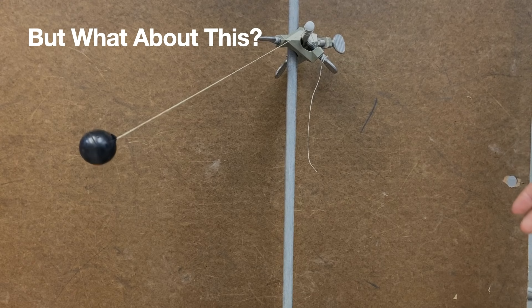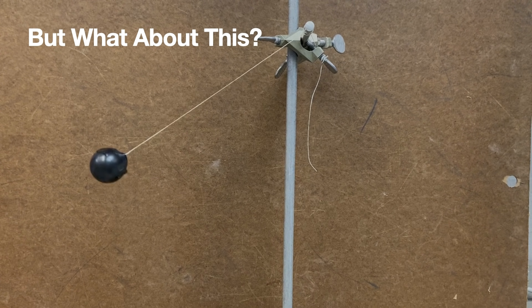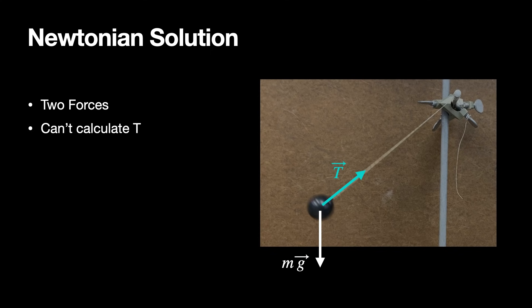What about a situation like this? This is a pendulum — the ball is swinging back and forth. Let's think about how you would solve this with Newtonian mechanics. There are two forces acting on this ball: the downward gravitational force, which you can calculate, and the tension force from the string. And you can't calculate the tension — there's no tension equation. It's not a calculated force.